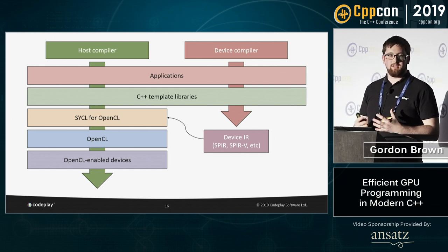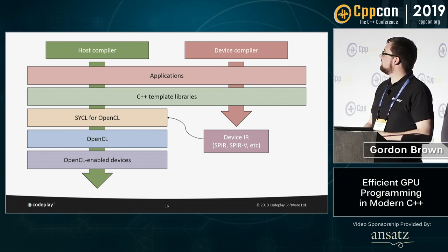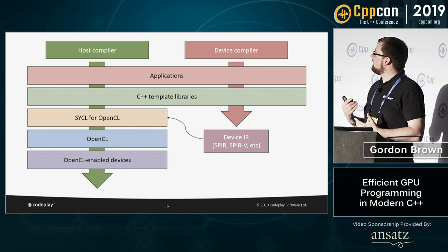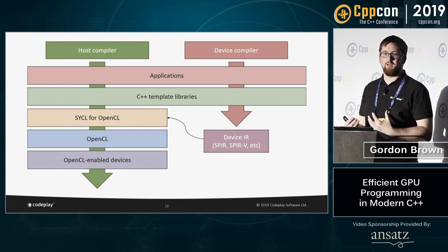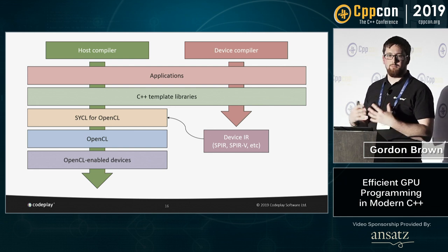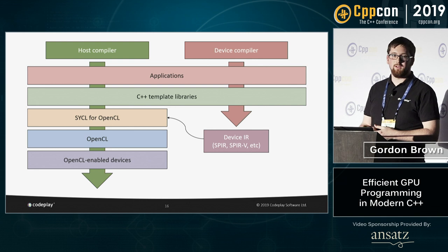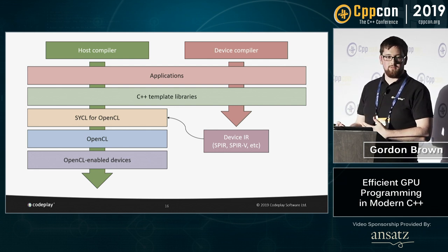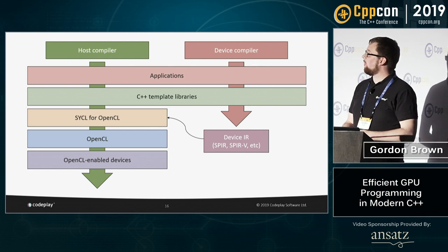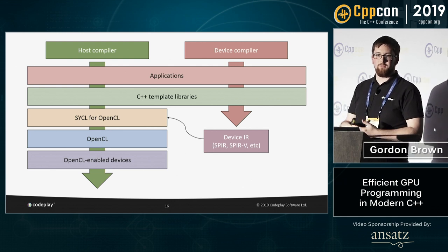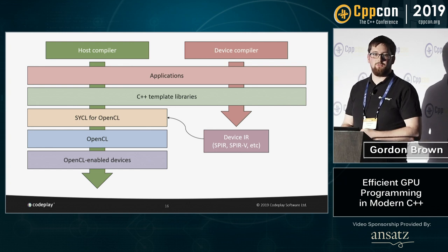One thing to note about SYCL is that compilation works slightly differently from a typical C++ application — it has two phases: host compilation and device compilation. For device compilation, the compiler identifies your kernel functions and compiles them down to some device representation such as SPIR or SPIR-V, or a vendor-specific instruction set. The host compilation uses any standard C++ compiler. The SYCL runtime then loads this separately compiled binary, doing just-in-time compilation if necessary, and executes it through OpenCL.